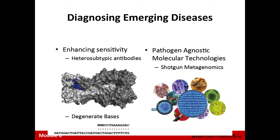You can also use degenerate bases in amplification techniques. Certain bases, like inosine, can bond to any of the other bases A, G, T, or C. Incorporating inosines into your primer means it can accommodate some variety in the target sequence it's trying to identify and will still recognize it. However, these approaches are not perfect. The current best technique for identifying a novel emerging pathogen is to use a whole genome sequencing approach.